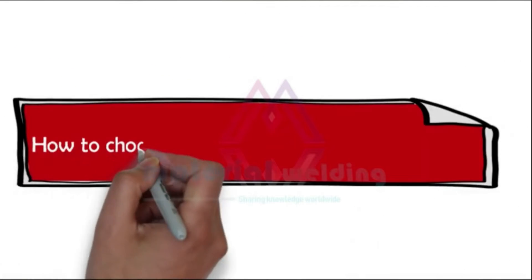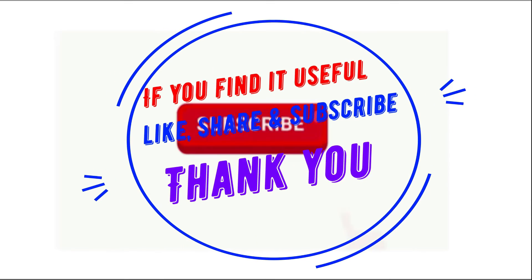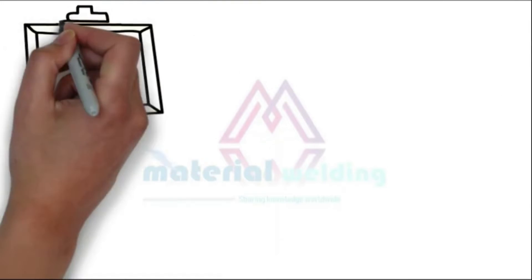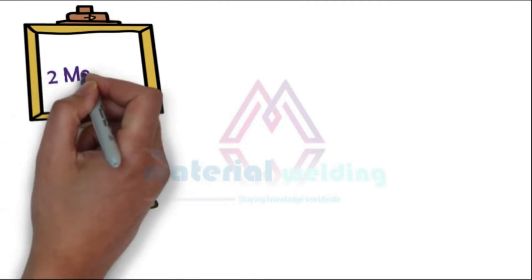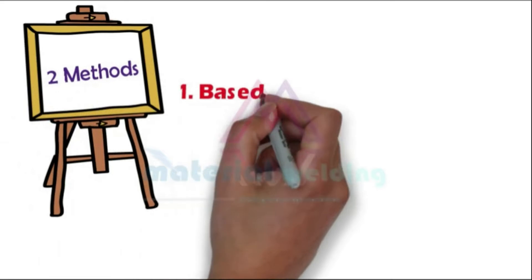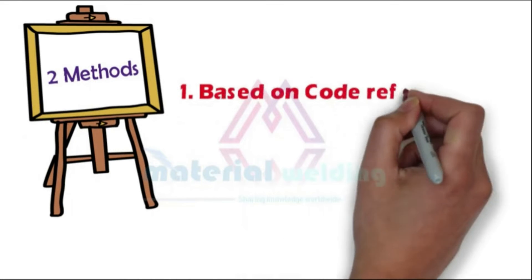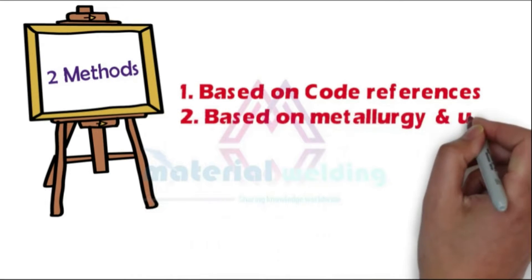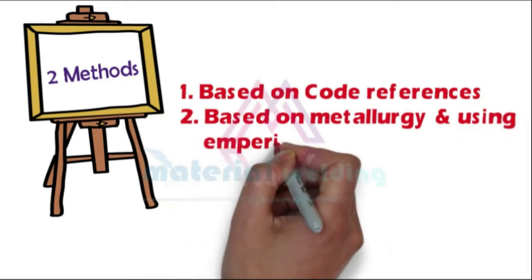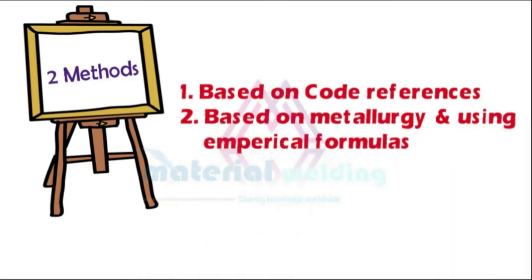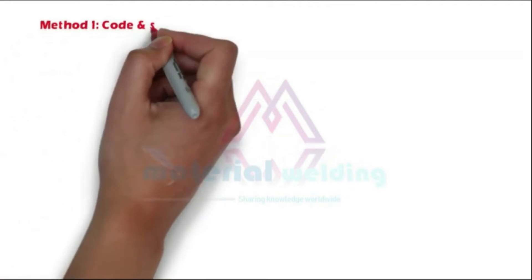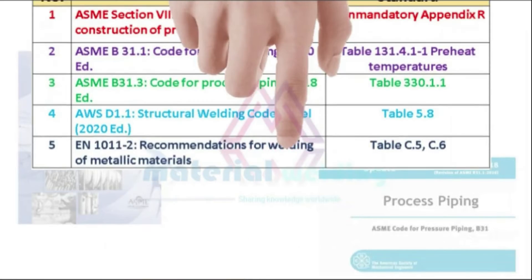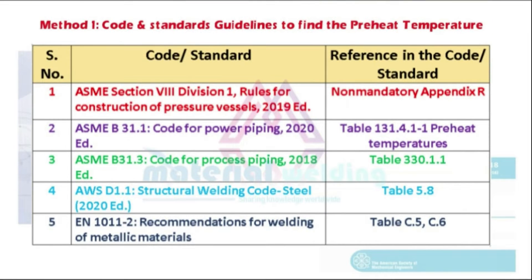How to choose welding preheat temperature? There are two methods. First, refer to recognized welding codes and standards such as ASME Section 8 Division 1, ASME B31.1 or B31.3, and AWS D1.1. The second method, you can use the free welding preheat calculator available at www.materialwelding.com. The link is given in the video description.